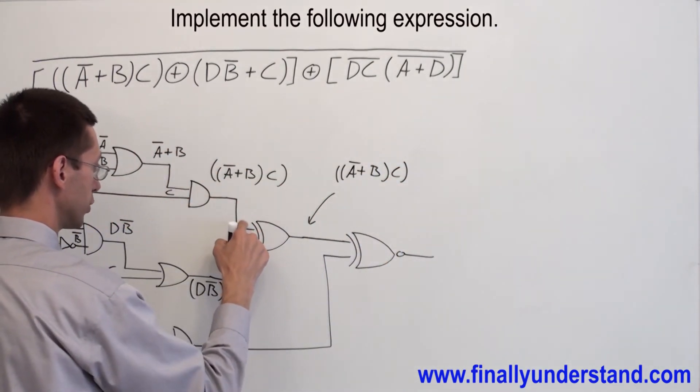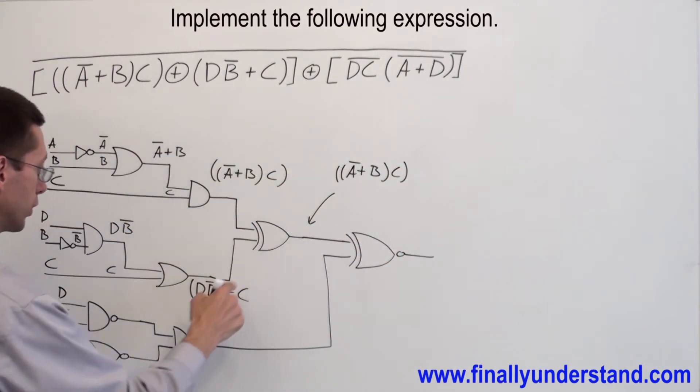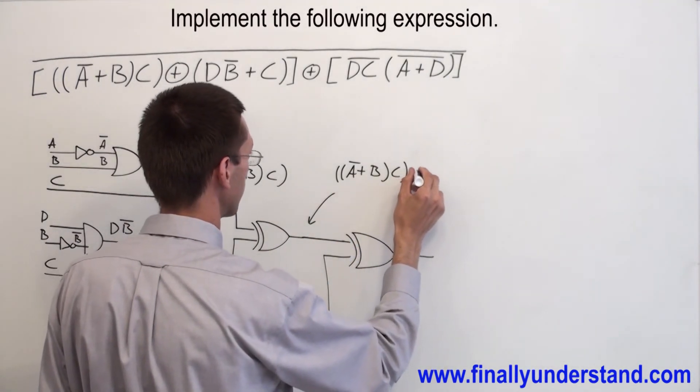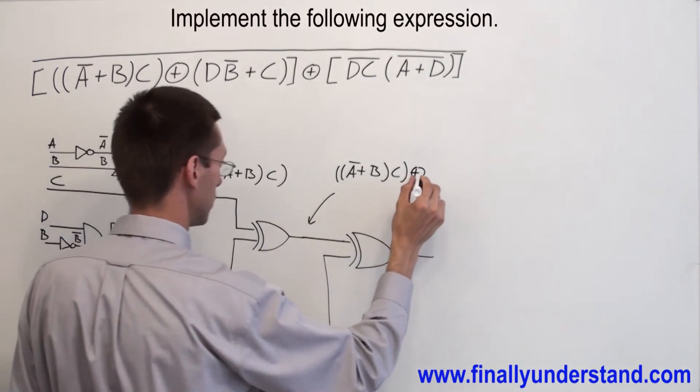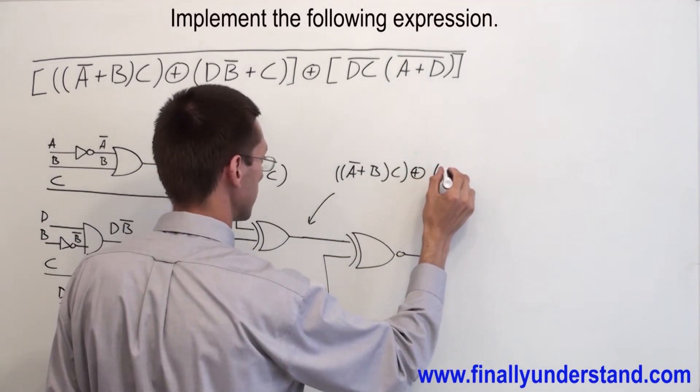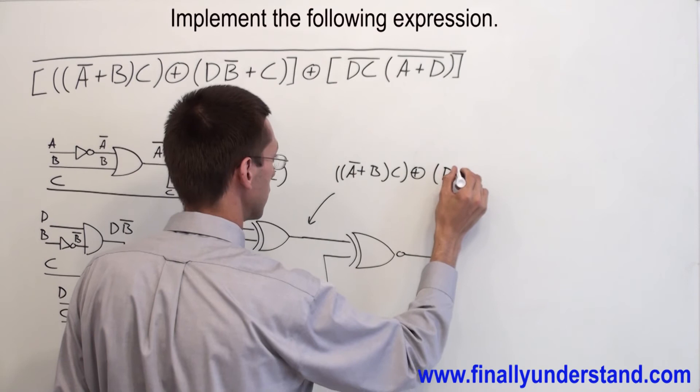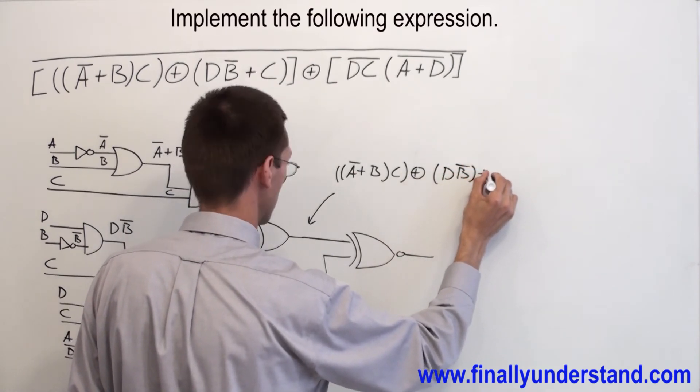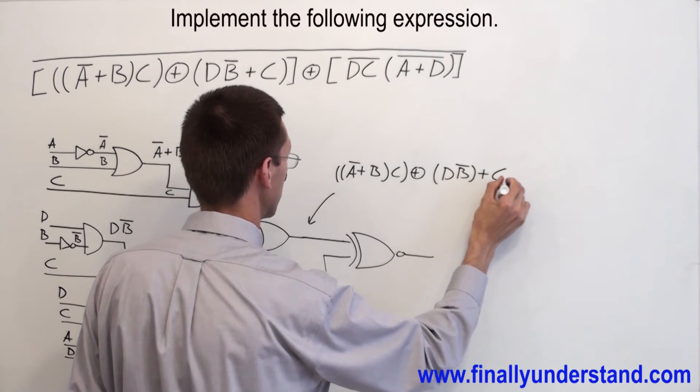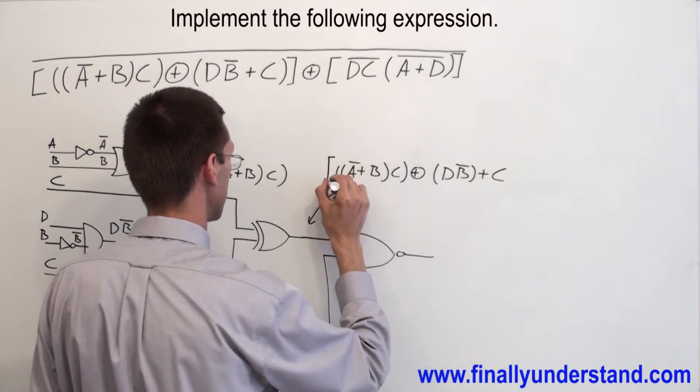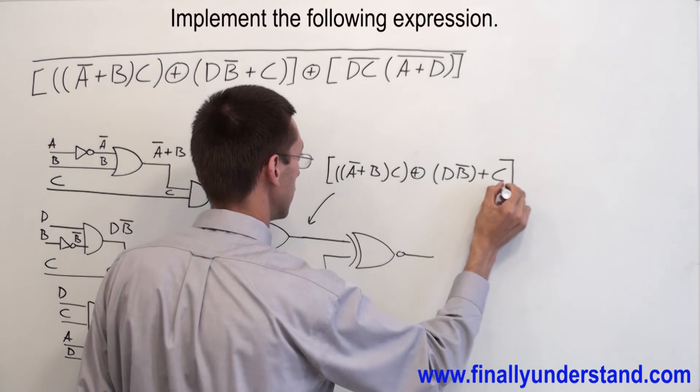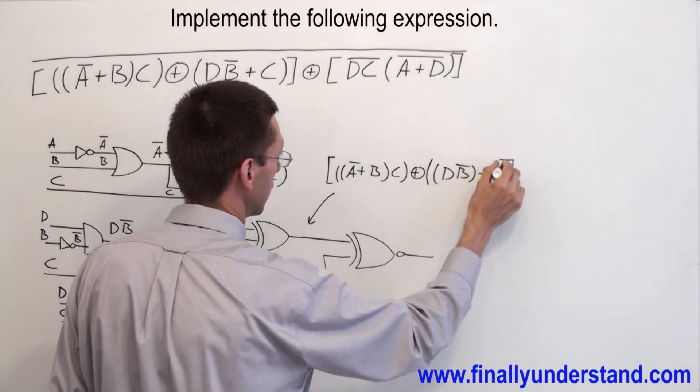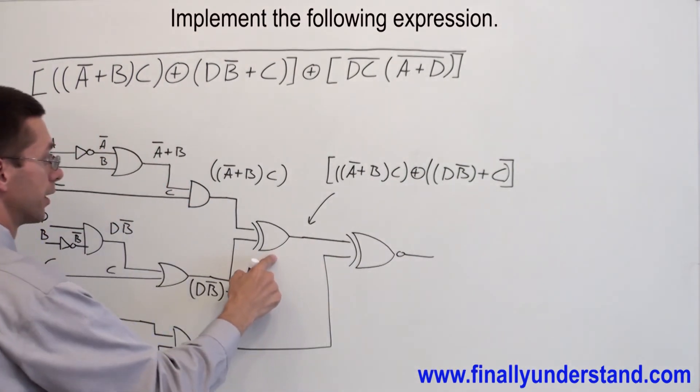And I'm going to have over here, open parenthesis, open parenthesis, A node OR B ANDed with C, whatever is on the first input, exclusively ORed with whatever is on the second input. I'm going to have exclusive OR, open parenthesis, D, B node OR C. I got this at the output of the exclusive OR.